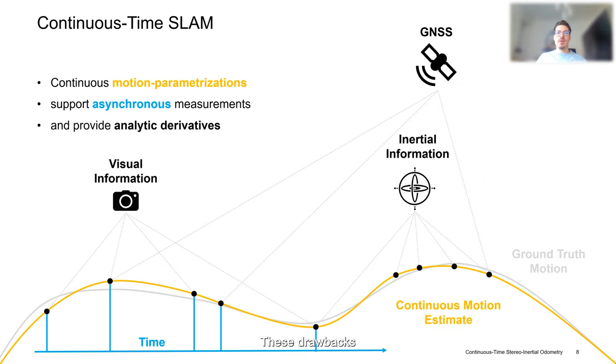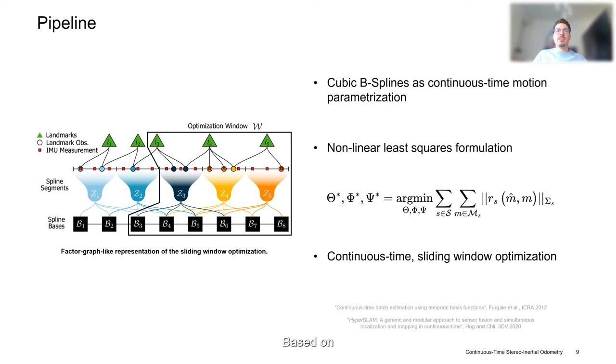These drawbacks can be alleviated by parameterizing the motion estimate as a continuous-time function, which can be queried at arbitrary times, and allows us to fuse unsynchronized measurements in a generic manner. In addition, continuous-time parameterizations also expose analytic derivatives to compute instantaneous angular velocities and linear accelerations, enabling us to directly fuse individual inertial measurements without pre-integration.